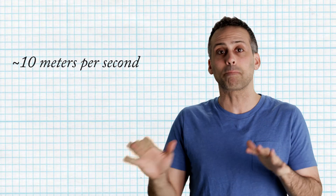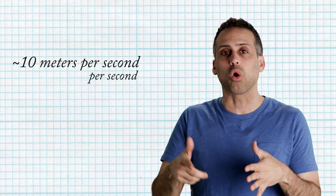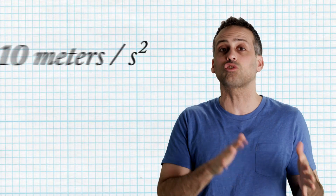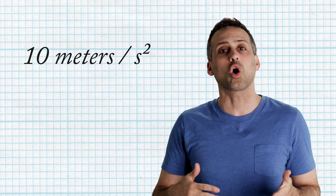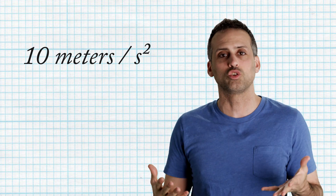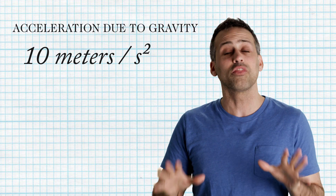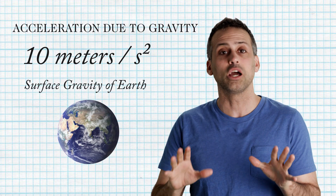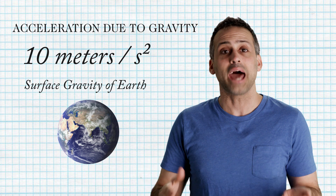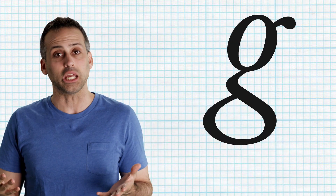That rate — around 10 meters per second per second, or 10 meters per second squared — is called the acceleration due to gravity, or the surface gravity of Earth. And it's usually denoted by a lowercase letter g.